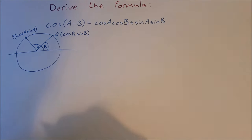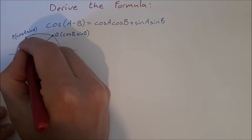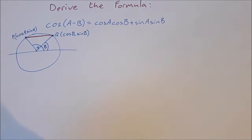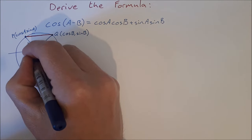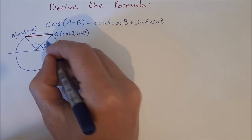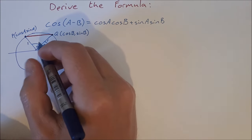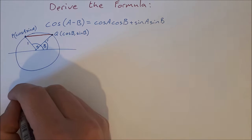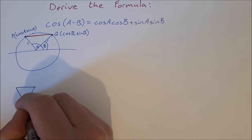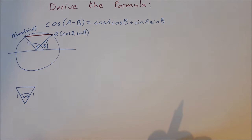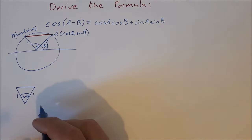We join point P to point Q and find the distance PQ using the cosine rule, because we have a triangle with two sides of length one and an included angle of a minus b. We can draw this triangle with angle (a - b) and both other sides equal to one.